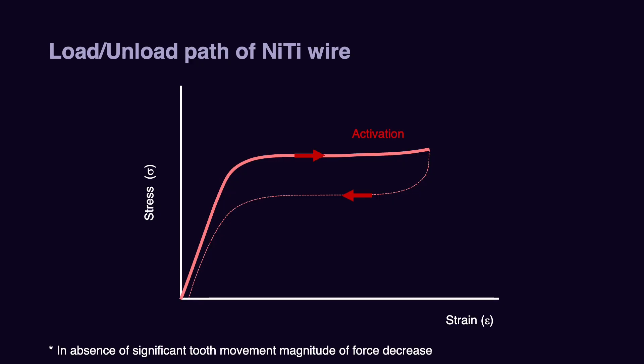Some places are linear, some places are plateau. Assuming we apply 100 centinewtons with a NiTi spring against a tooth — if the tooth does not move, does the force stay at 100 centinewtons as with stainless steel? The answer is no; after a while the force the NiTi produces decreases. That is why we recommend tying and untying the NiTi wire even if the tooth is not moving — because the magnitude of the NiTi force starts to decrease, and by tying and untying you temporarily increase the force by returning to the linear part of the unloading graph, after which it plateaus and decreases again.